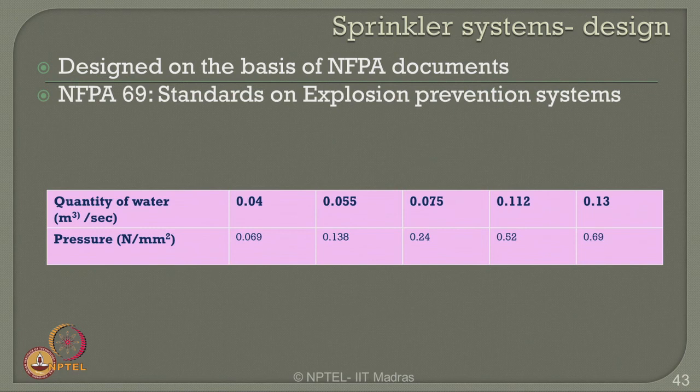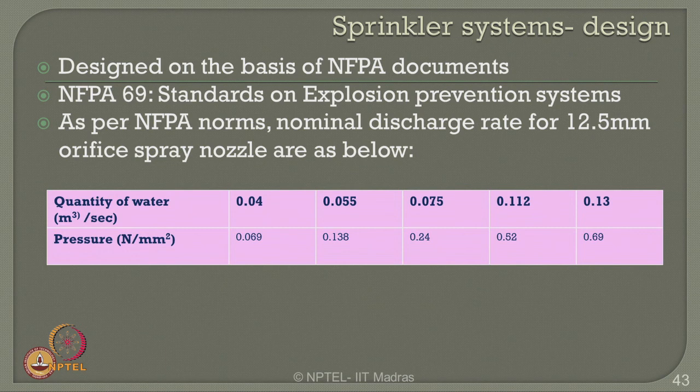Sprinkler designs are based on NFPA recommendations. One should aim at the minimum quantity of water required at a specific pressure available from the literature as a guideline. The quantity of water in cubic meters per second and corresponding pressure in newton per millimeter squared is given as a guideline for designing sprinkler systems. As per NFPA norms, the nominal discharge rate for 12.5 mm orifice spray nozzle is given in the table shown.